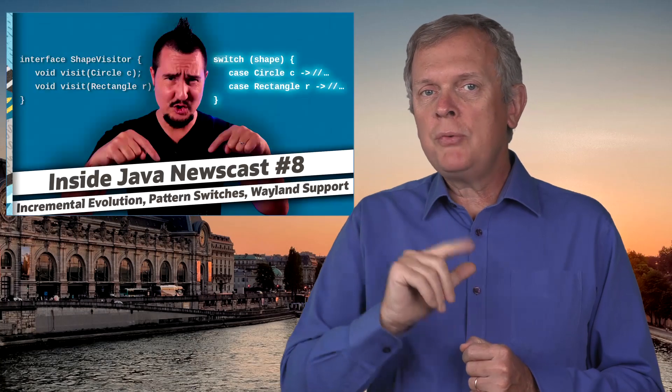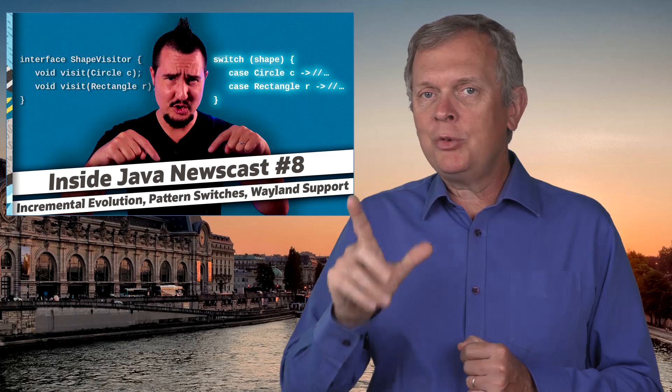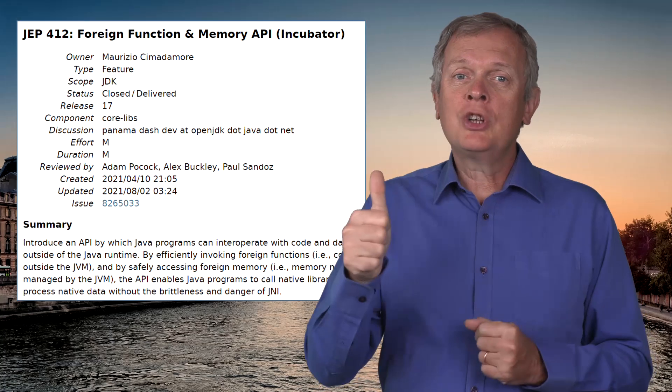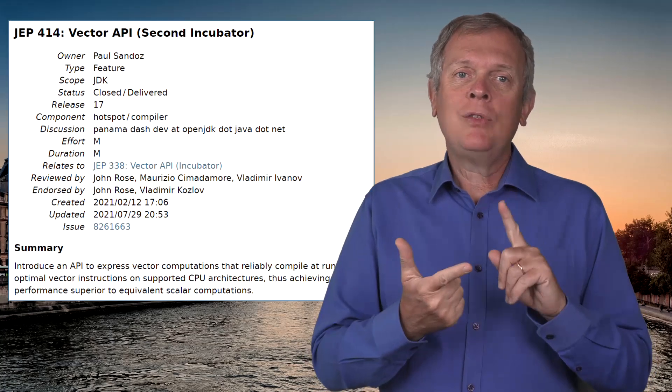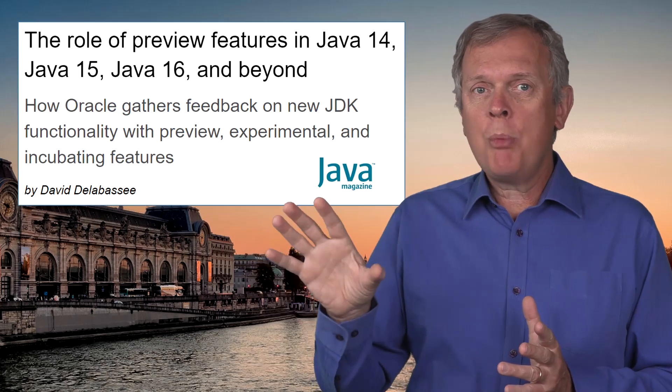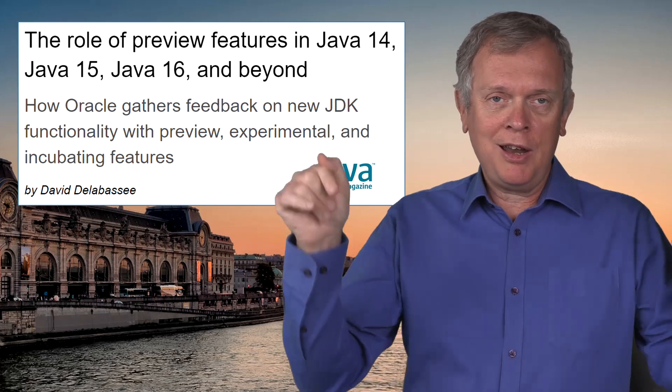The first one is sealed classes as a permanent feature, which we covered in Jep Café episode 2. The second one is pattern matching for switch, a preview feature covered in newscast episode 8. And third, two incubator features: the foreign function and memory API, and the vector API. If you want to try the preview features or incubator features but don't know how to activate them, you can read this article by my friend David Delabassée published on Java Magazine. Link down below.